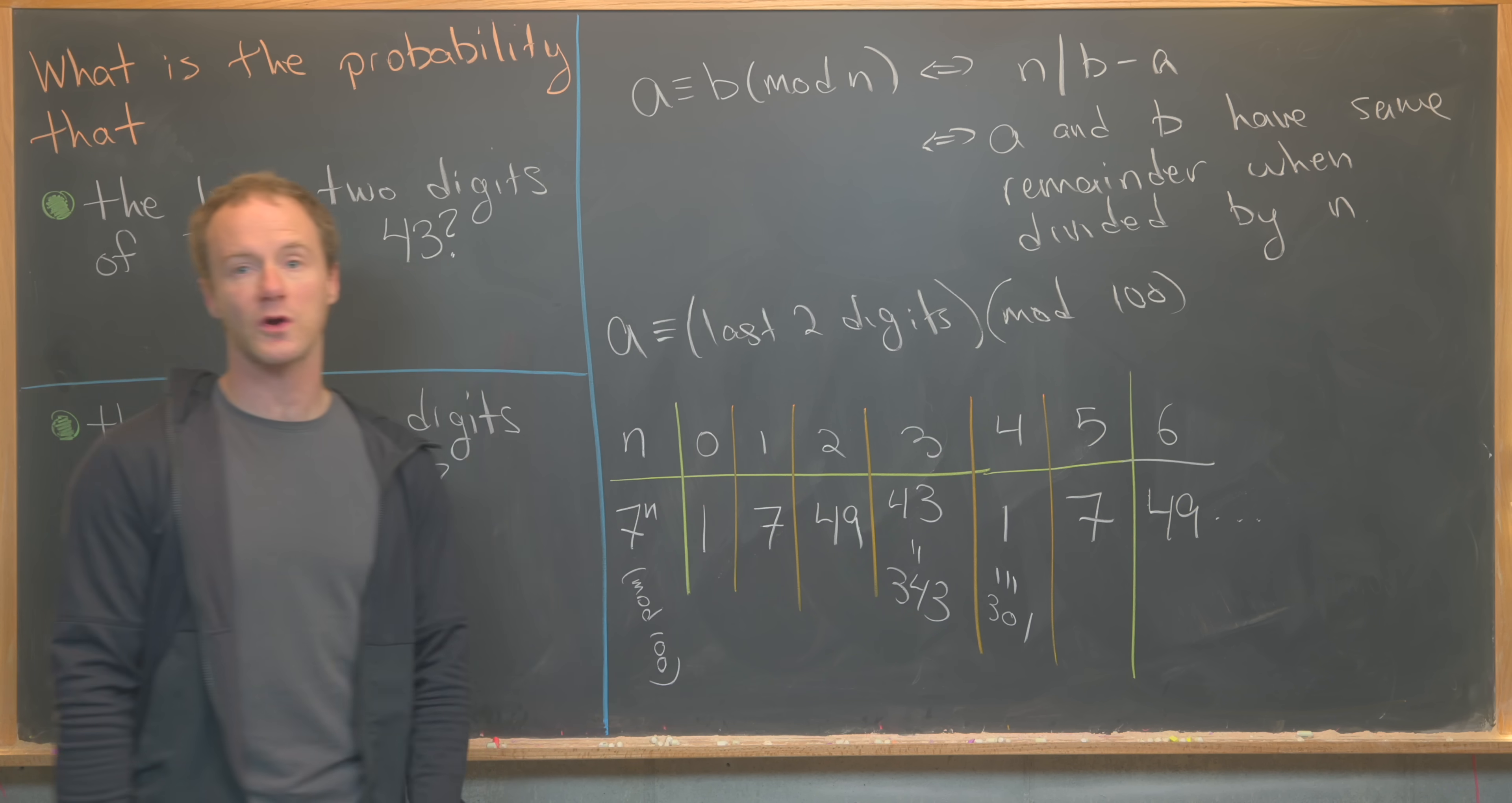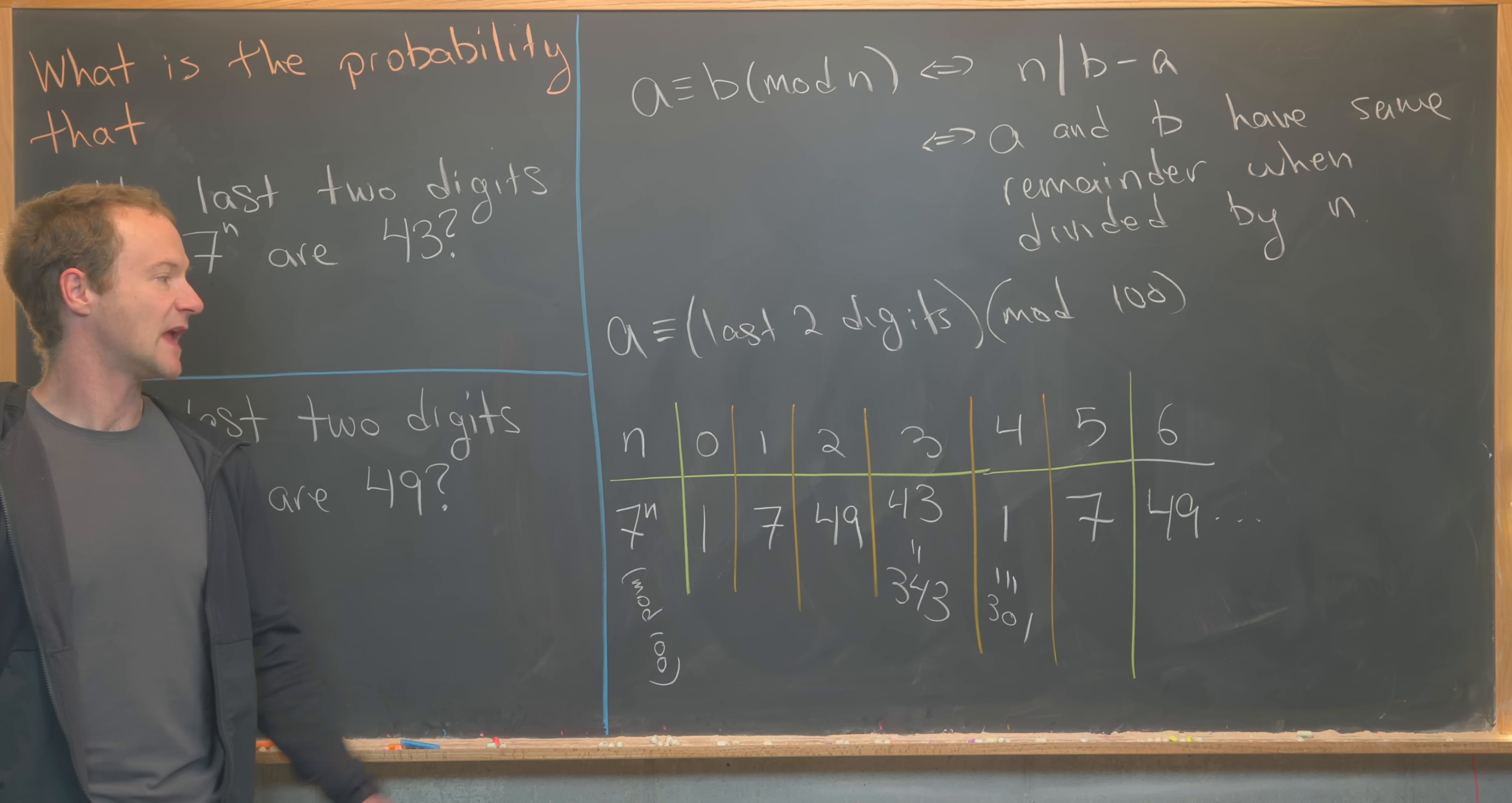So it turns out that 7 to the n can only take on 1, 2, 3, 4 different values. And each of these values are equally likely because they continue repeating like that. So since they take on 4 values that are equally likely, and this is one of the values, our probability is 1 quarter.